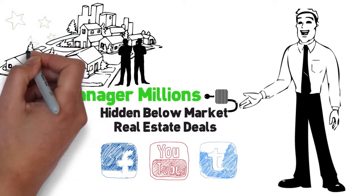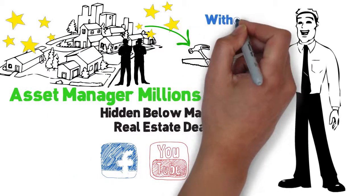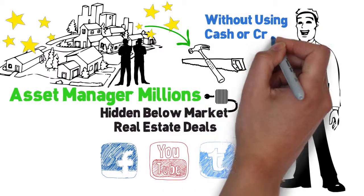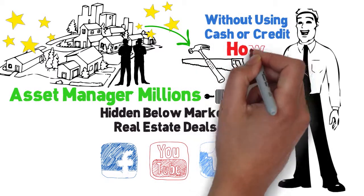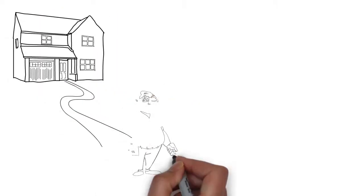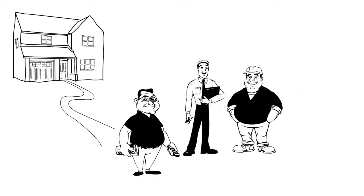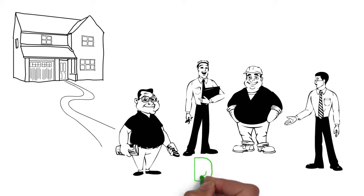And then, once you have access to these undiscovered properties, Charlie could easily flip these properties without ever using any of his own cash or credit. How, you ask? Well, that's the really beautiful part. Asset Manager Millions shows you exactly how to have the right partners in place that have money for these real estate deals.